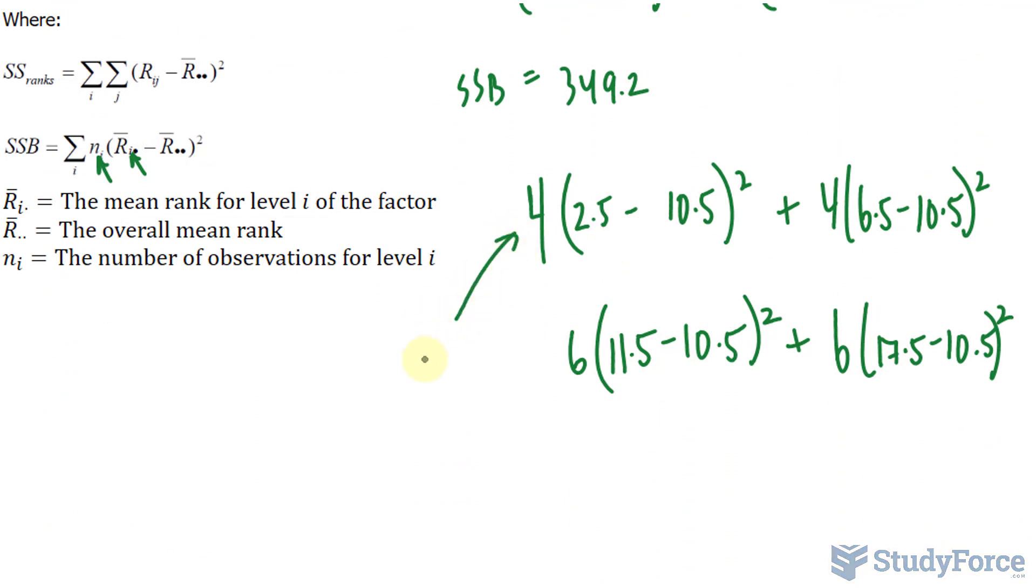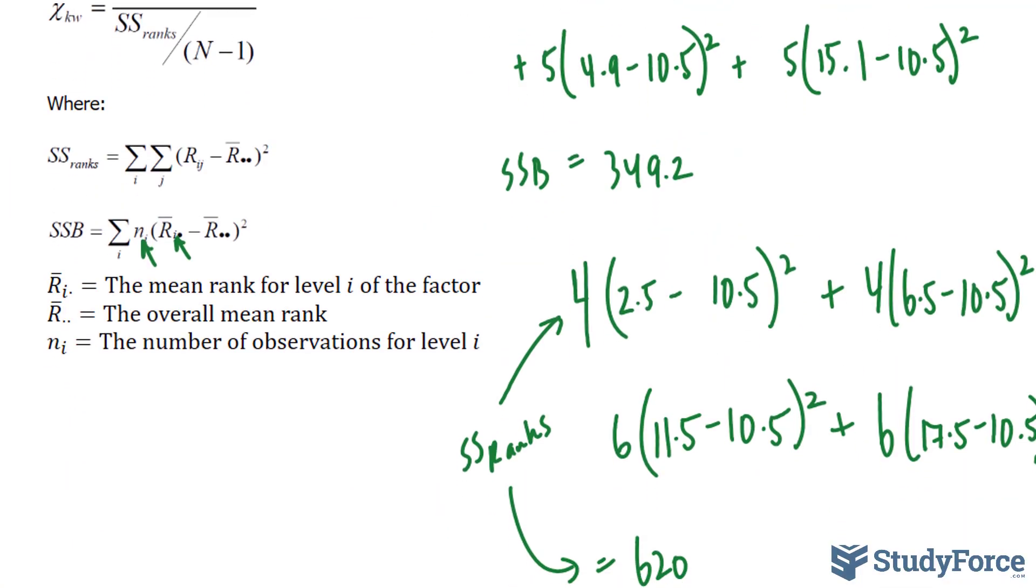Now, if you put this into your calculator, you will end up with 620. We have everything we need to calculate chi-square, so I'll take 349.2 over the value that we just found, 620,